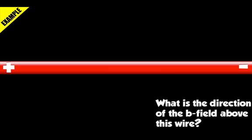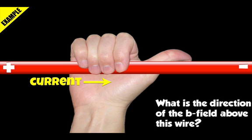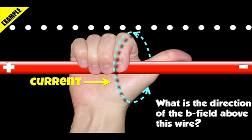Let's try another example. I have a wire in front of me with the positive side of the battery on the left and the negative side on the right. What's the direction of the B-field above the wire? Current flows from positive to negative, so I take my right hand, point my thumb to the right in the direction of the current, and grab the imaginary wire. My fingers show the direction of the magnetic field rotating around the wire. Above the wire, they're coming right at me — tangent to the circle means out of the screen, represented by dots.